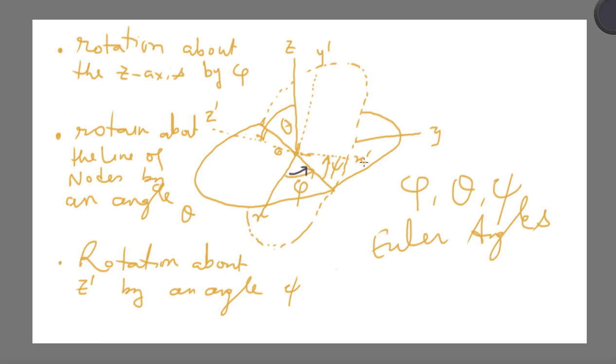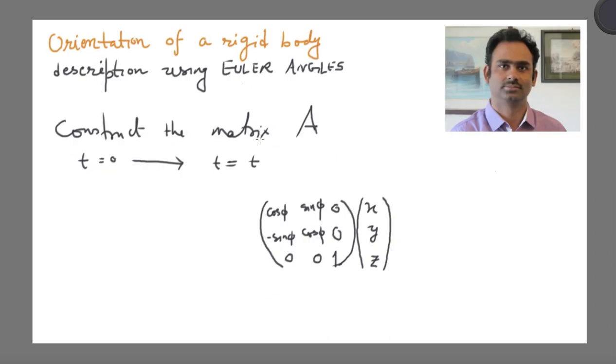Now what you have to do? Go from these intermediate axes to a new set of axes by doing a rotation about the line of nodes, if you recall by an angle theta. And again, this is a counter clockwise rotation. So what I should do is to effect that rotation, I should include another matrix for the x-axis.